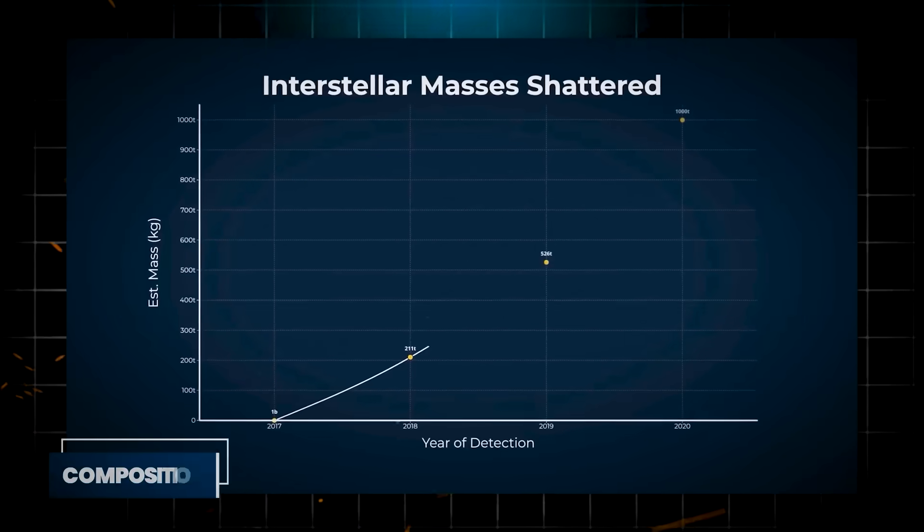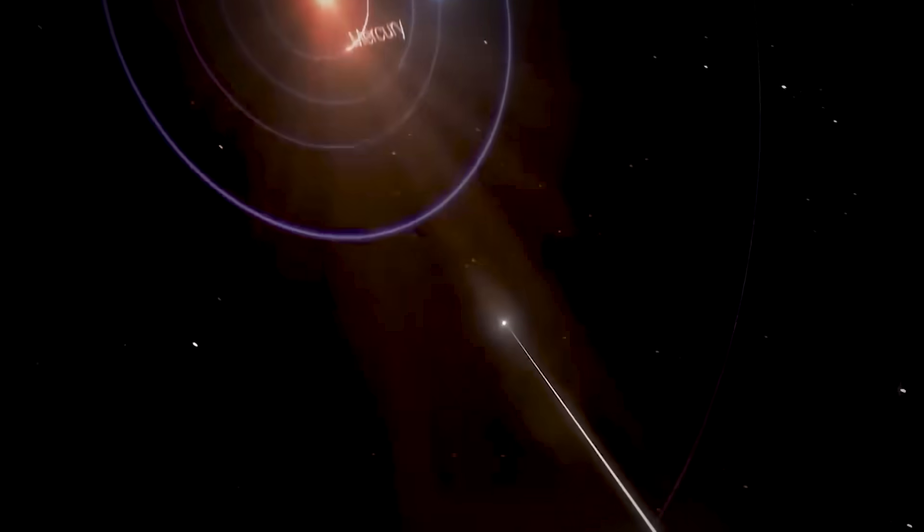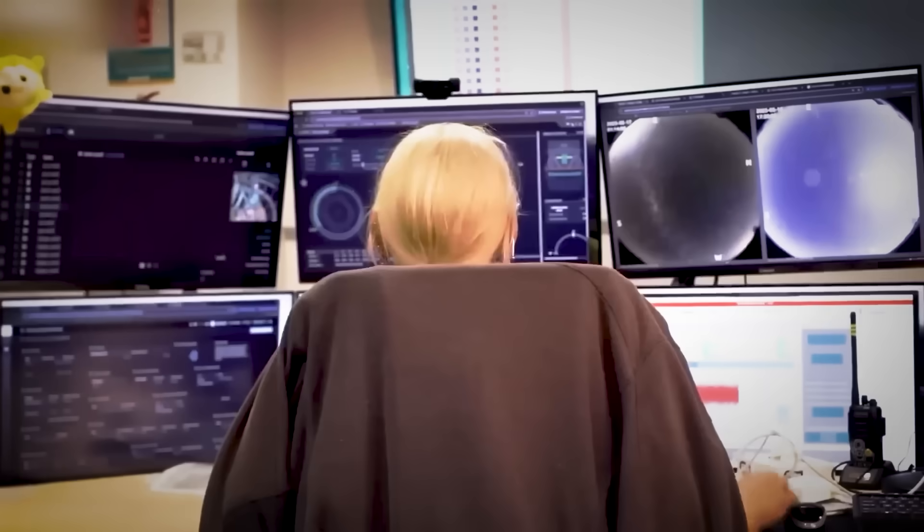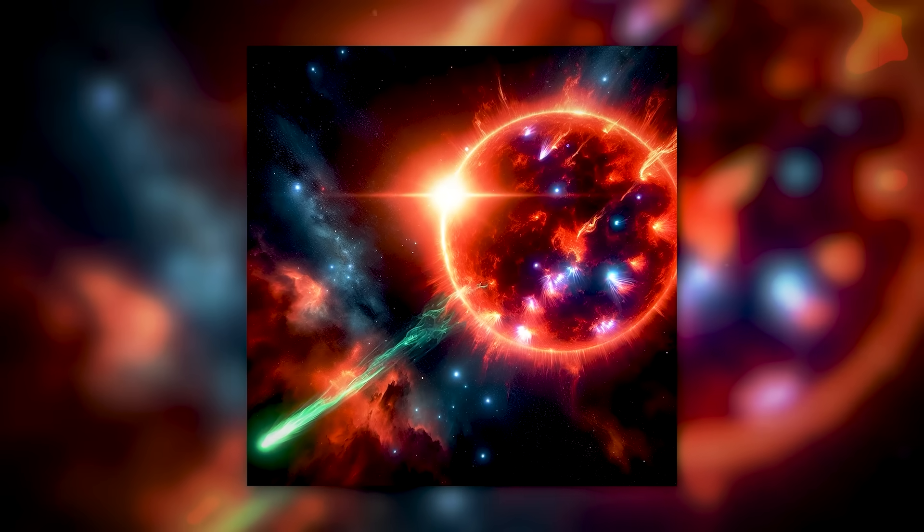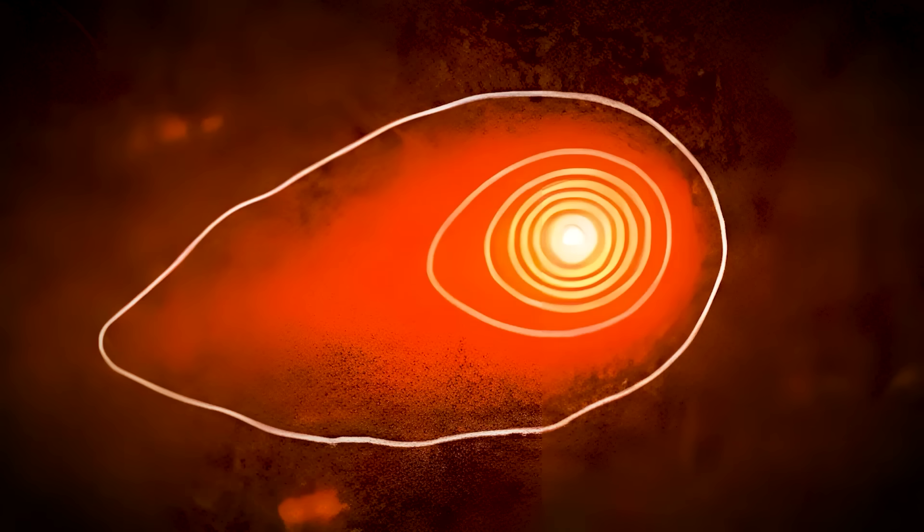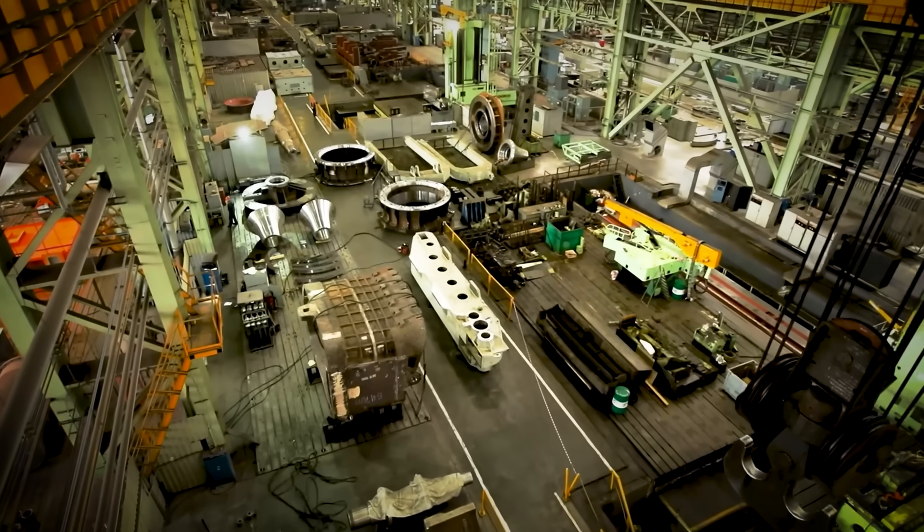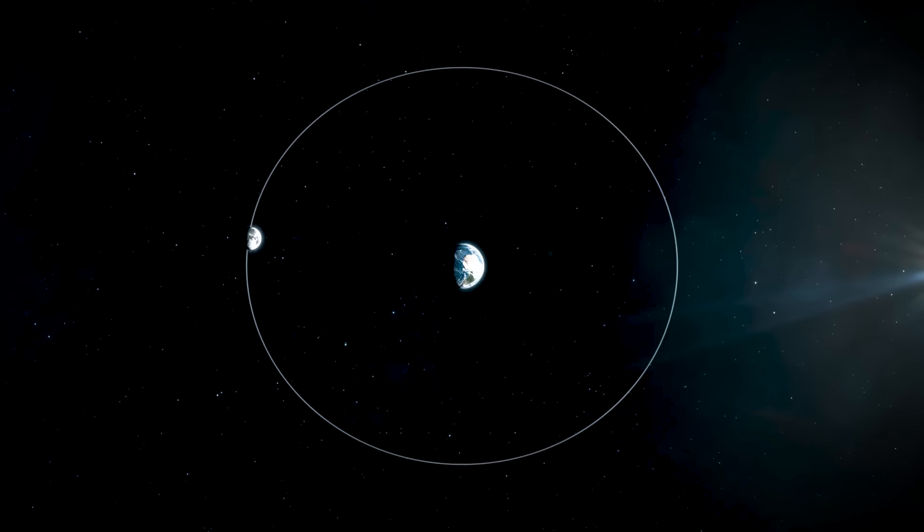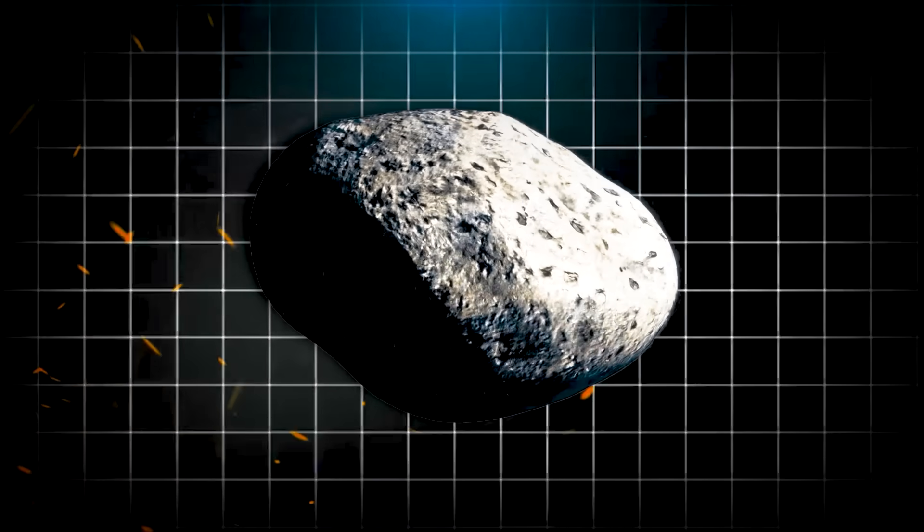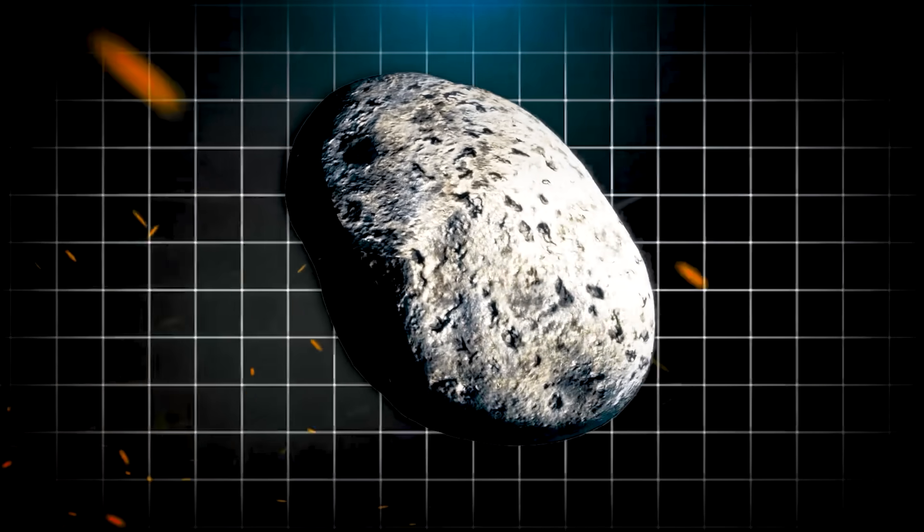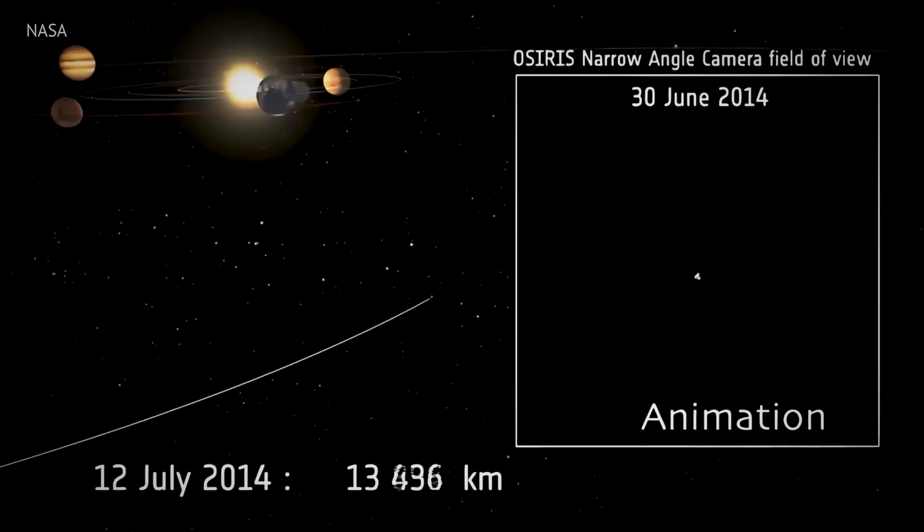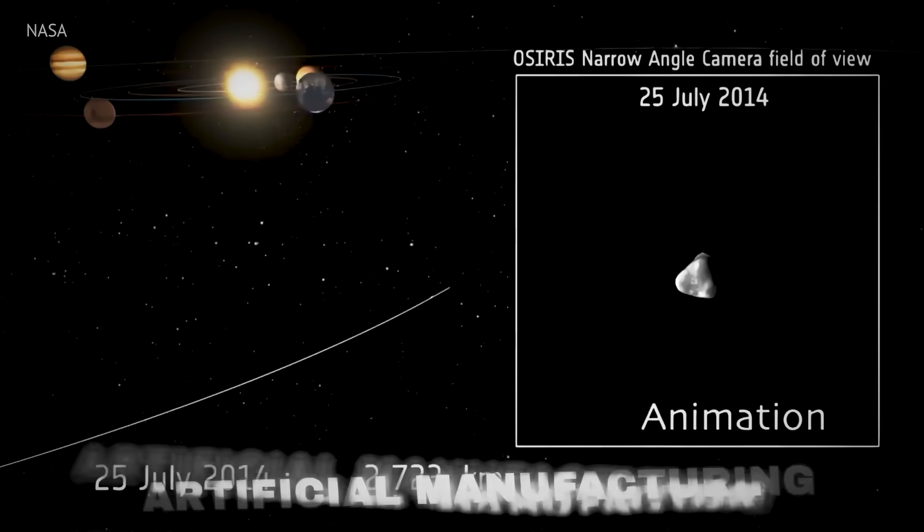The first major red flag came from its composition. When scientists analyzed the light reflecting off 3I Atlas, they discovered something that shouldn't exist in a natural comet. Pure nickel without iron. Here on Earth, the only way we create nickel without iron is through industrial processes when we manufacture specialized alloys. Nature doesn't work this way. Every natural nickel deposit we've ever found contains iron as well. But 3I Atlas is essentially carrying a cosmic calling card that screams artificial manufacturing.